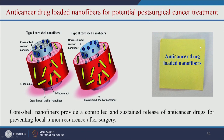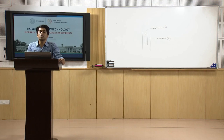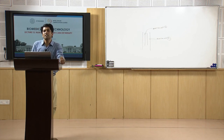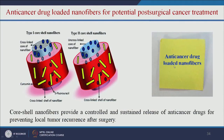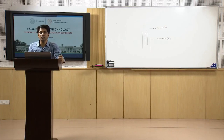The final product of anti-cancer drug-loaded nanofibers can be tuned to release the drug in a controlled manner — by cross-linking the core, drug release can be regulated. Core-shell nanofibers provide a controlled and sustained release of anti-cancer drugs for preventing local tumor recurrence after surgery. The main drawback of tumor surgery is that cells can grow again after removal. To prevent this, anti-cancer drug-loaded nanofibers can be placed at the surgery site to slowly release the drug and prevent cancer cell recurrence.